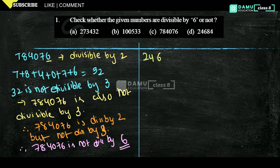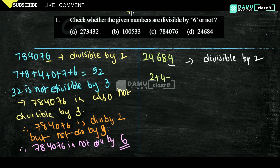Our next number is 24684. The unit digit is 4, so it is divisible by 2. Now add all digits: 2 + 4 + 6 + 8 + 4 = 24.